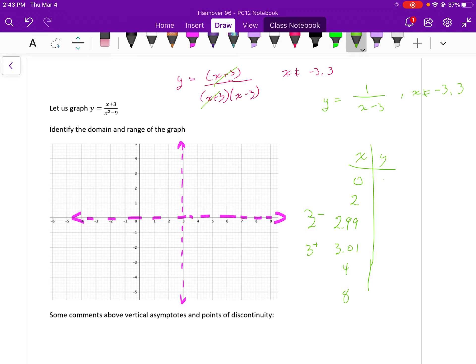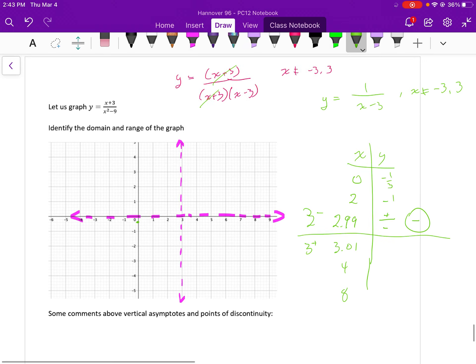If I plug in 0 into my function, I get negative 1 third. If I plug in 2, I get negative 1. If I plug in 2.99, now I'm going to take the sign test here. My numerator is going to be positive. My denominator is 2.99 minus 3, is going to be negative. So, overall, this will be negative. So, asymptotically, my graph will approach negative infinity. So, if I just simply graph those points here, I can see what the left-hand side of my graph looks like. So, that's what that left side of the asymptote looks like.